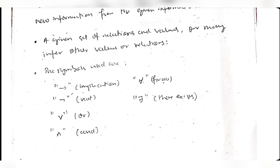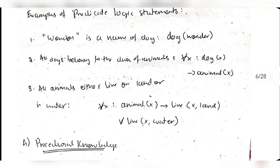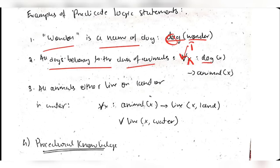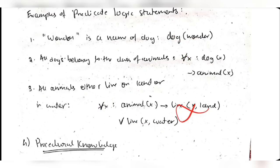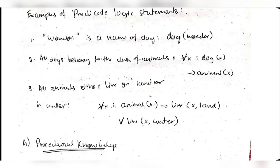Examples of inferential knowledge: 'Wonder is a dog's name' is represented as dog(wonder). 'All dogs belong to the class of animals' is written as ∀x dog(x) → animal(x). 'All animals either live on land or in water' is written as ∀x animal(x) → live(x, land) ∨ live(x, water) - meaning for all animals x, either x lives on land or x lives in water.